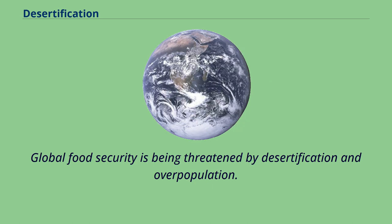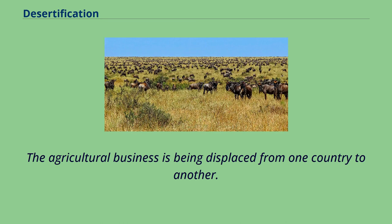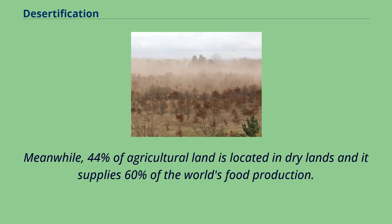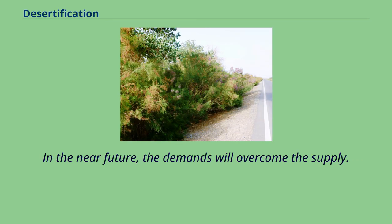Global food security is being threatened by desertification and overpopulation. The more the population grows, the more food that has to be grown. The agricultural business is being displaced from one country to another — Europe on average imports over 50% of its food. Meanwhile, 44% of agricultural land is located in drylands and supplies 60% of the world's food production. Desertification is decreasing the amount of sustainable land for agricultural uses while demands continuously grow, and in the near future demands will overcome supply.